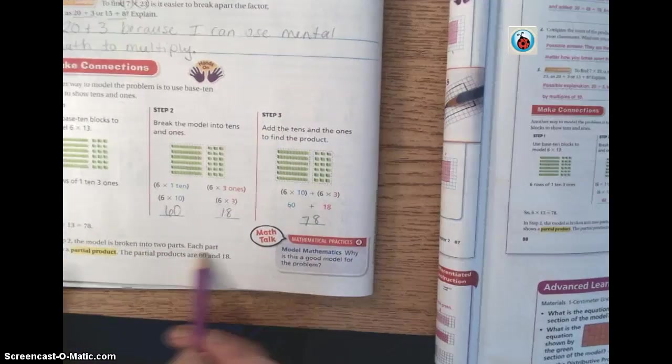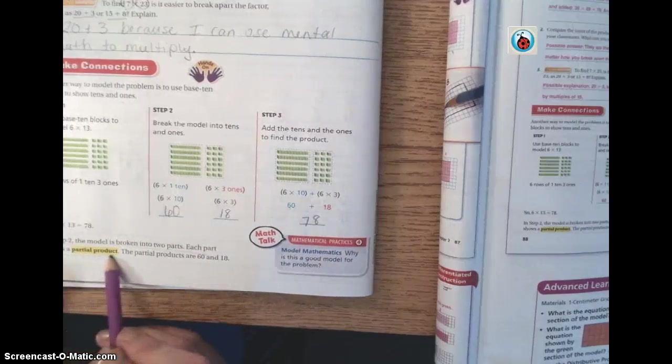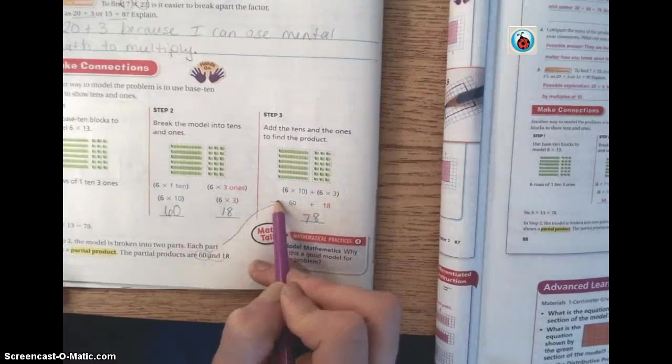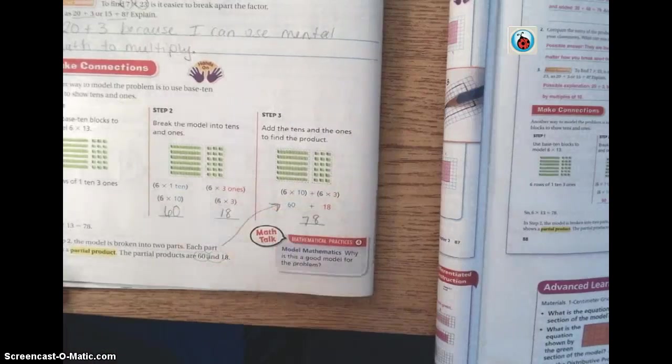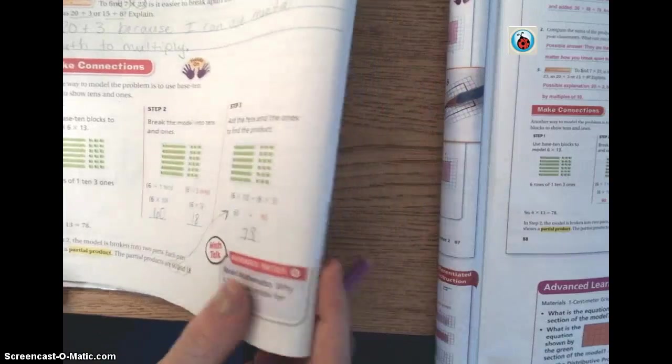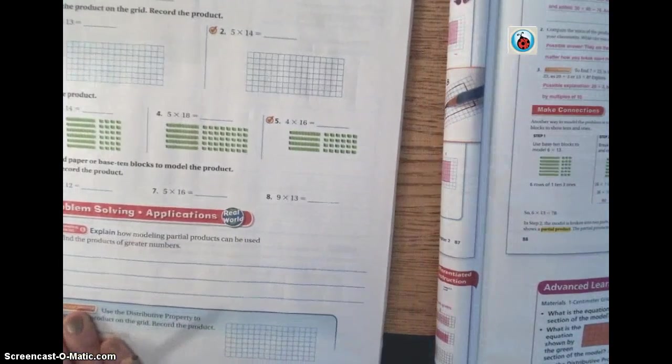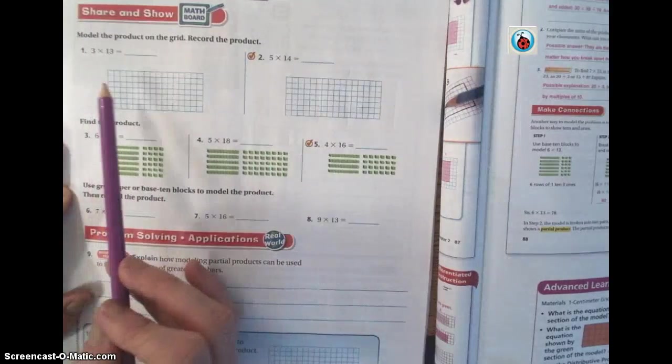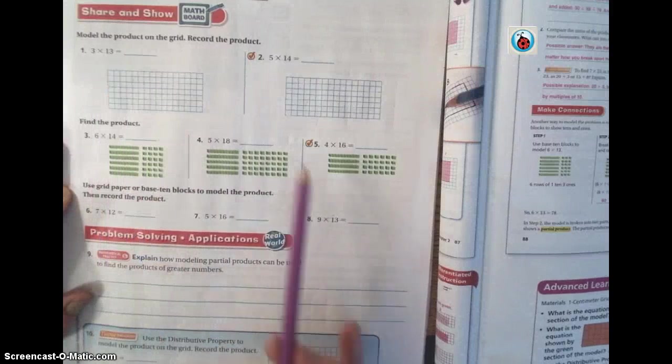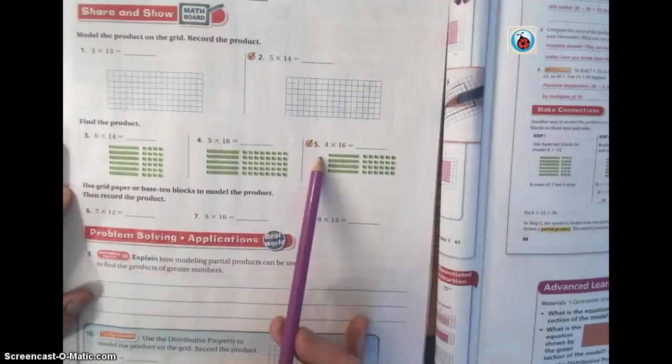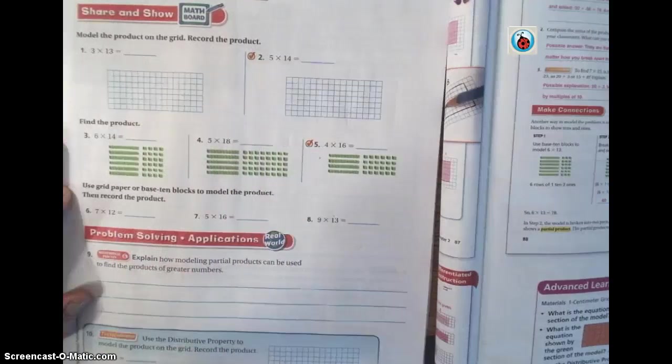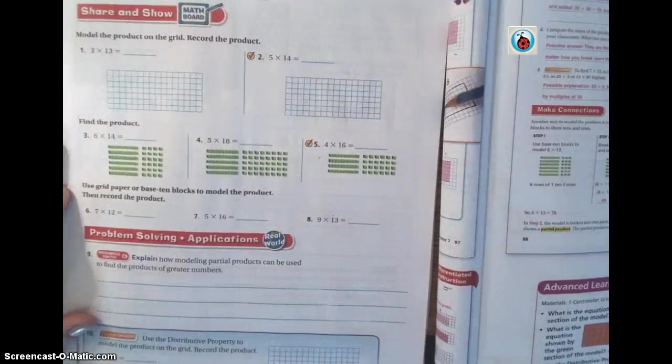In step 2, the model is broken into two parts. Each part shows a partial product. The products are 60 and 18. That concludes the Sharon Show. You're going to go on your own and you're going to do numbers 1 through 8. You really want to focus on getting number 2 and 5 done. So you might start with number 2 and 5 and then do the rest. Because 2 and 5 are going to determine your groups. Thanks for helping me, guys.